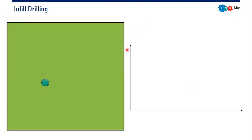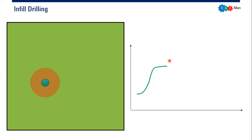So let's say we want to conduct infill drilling. We have an oil well here and we have an oil production well there — this will be our production chart. This well produces oil and we can see the extension of the drainage area, denoted by this red circle. This is the production profile of this well: production increases until it reaches the plateau period.